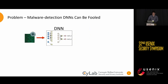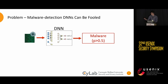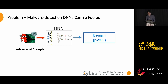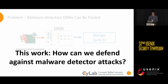In the malware domain, this means you could have a piece of malware that is correctly classified by a deep neural network. Unfortunately, by applying some targeted perturbations meant to evade the detector, we can make it so the classifier no longer detects the malware and classifies it as benign. This is an issue, and the objective of this work is to defend against these attacks.